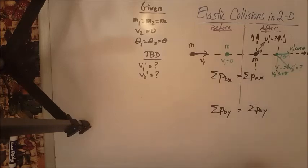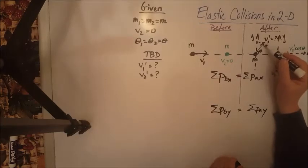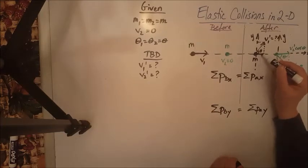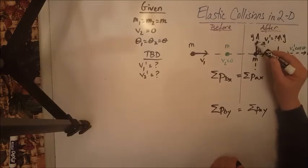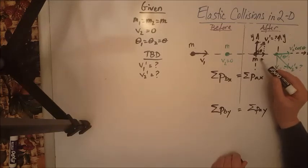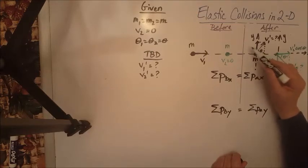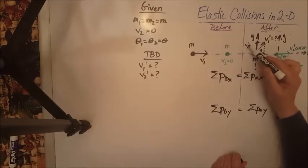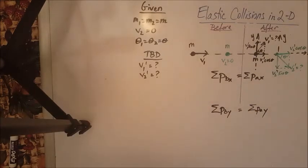Now for V1 prime, we are going to do the exact same thing. We are going to resolve it carefully by drawing perpendiculars to the x and y-axis, giving us one component this way and the other component that way. Now this one is going to be V1 prime cosine theta, and this one is going to be V1 prime sine theta.